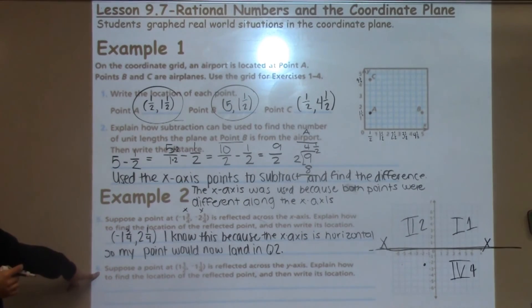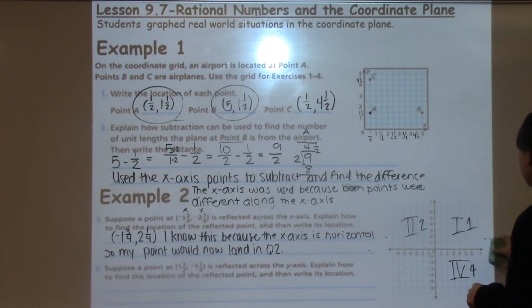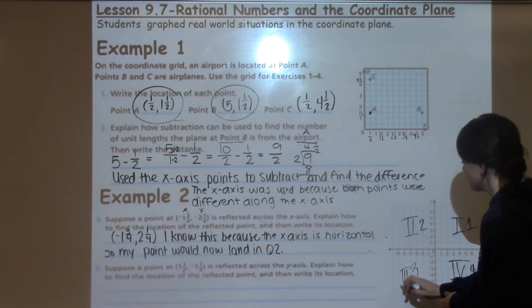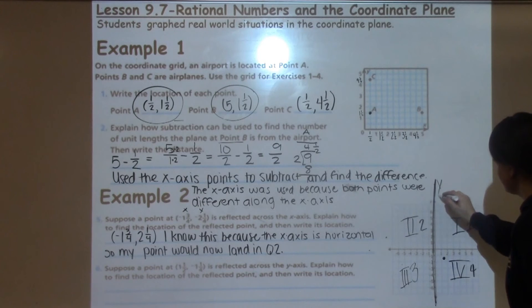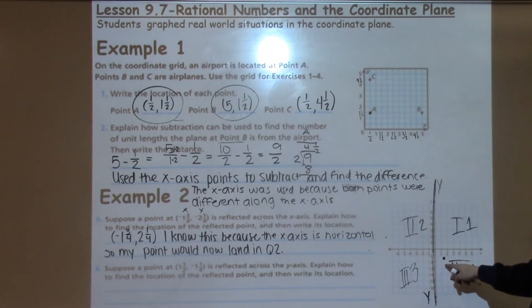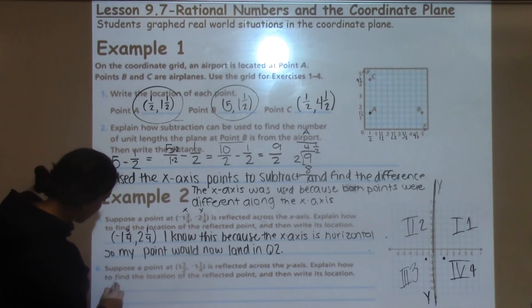Let's look at the next question. It says, suppose a point at one and a half and negative one and one-fourths is reflected across the y-axis. So we have a point one and a half, so that would be positive over one and a half, and then negative, it goes down one and a fourth. So really my point is going to be right about there is where it's going to live. And it says, what if it's reflected across the y-axis? Well, the y-axis, remember, is my vertical axis. So right now my point is living in quadrant four. It's got an x-axis that's positive, a y-axis that is negative. If it's reflected vertically across the y-axis, it's going to end up in quadrant three at the same spot, but now both numbers are negative. So I'm going to have a negative one and a half and a negative one-fourth. And our answer is going to be very similar. I know this because the y-axis is vertical, so my point would land in quadrant three.